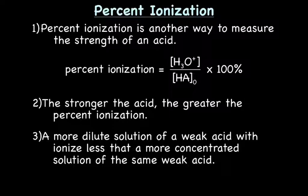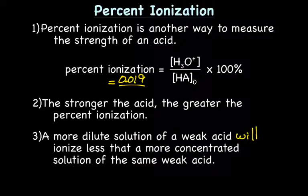Alright, so a quick practice problem here from our last problem. The concentration of H3O+ we came up with was 0.019. So percent ionization equals 0.019 over the initial concentration of our acid, hydrofluoric acid, which was 0.5, times 100%, gives us a percent ionization of 3.8%. So this is a fairly weak acid.